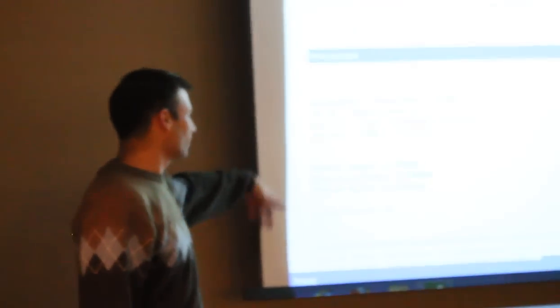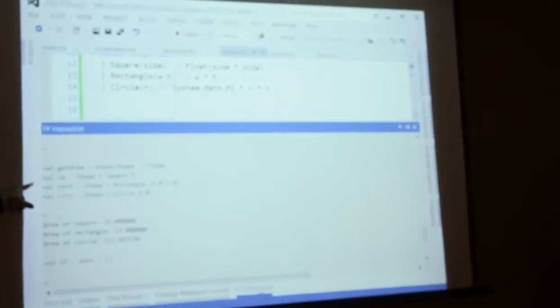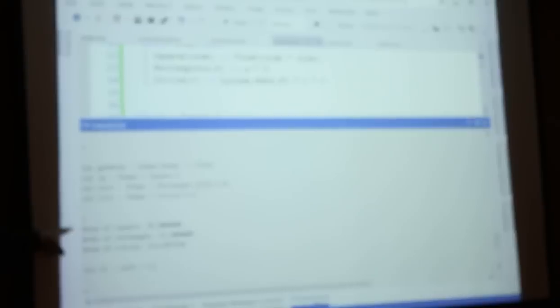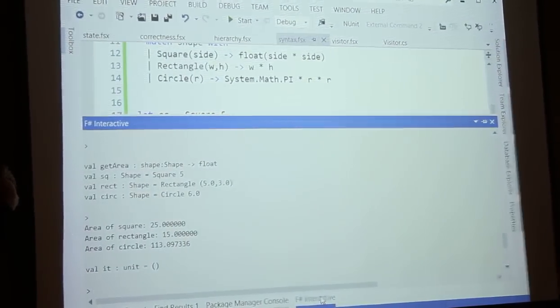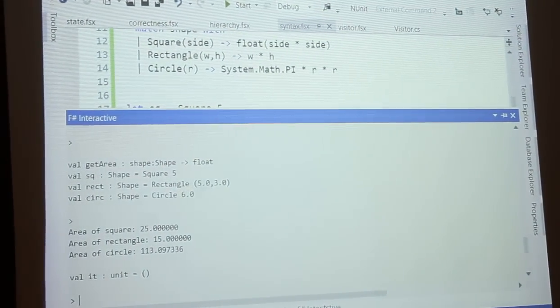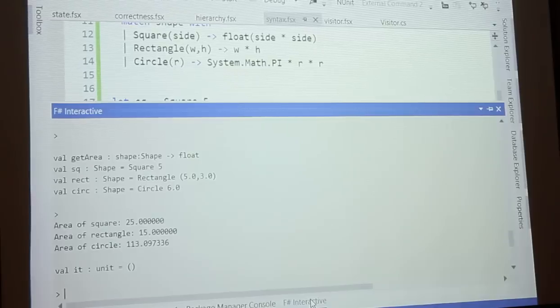So here I just ran the code here in the interactive window. So here's our function and here are the values that we're creating and then here it is calling the function printing out the areas.